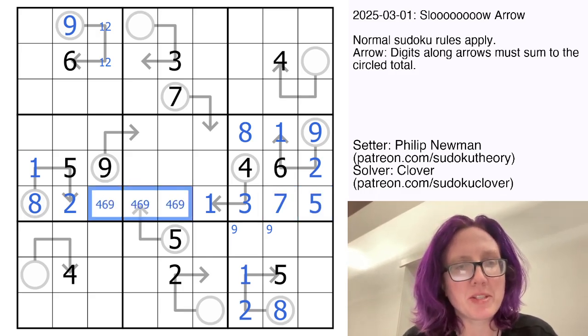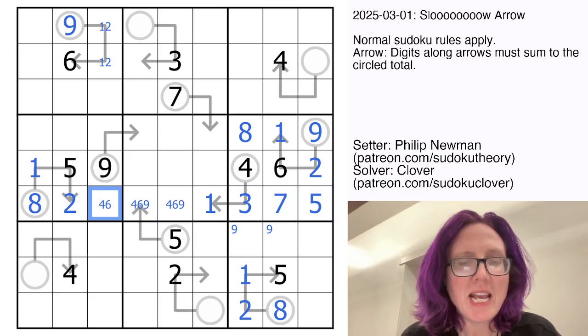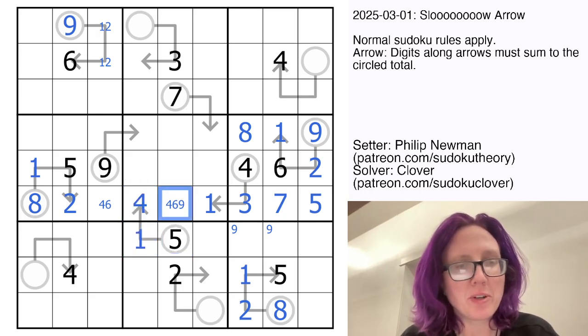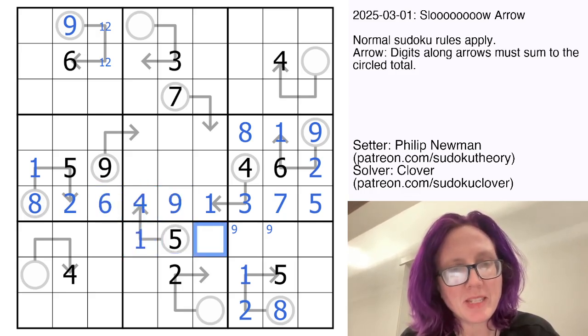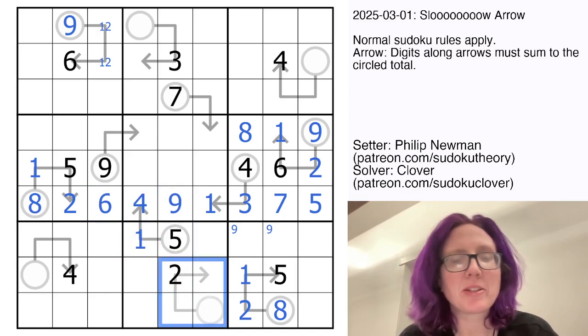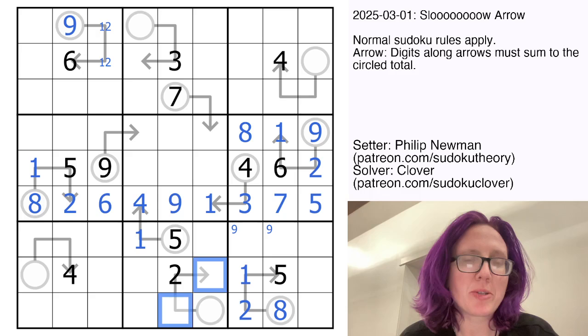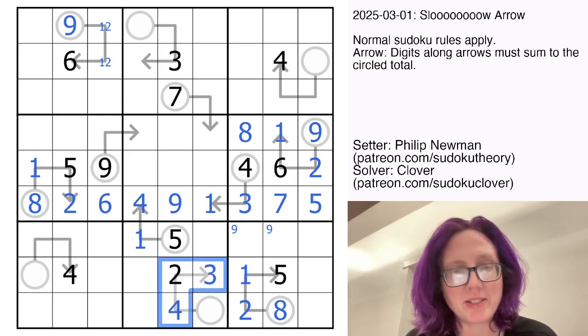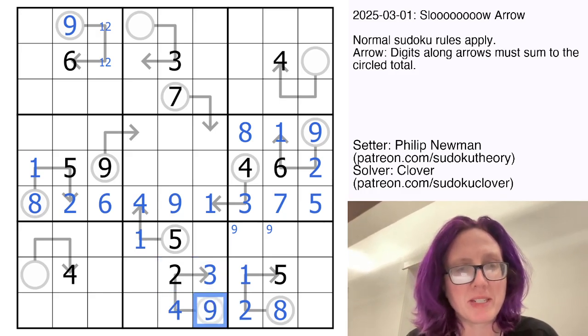And these digits are going to be four, six, and nine to finish off the row. That can't be a nine. That can't be a six or a nine because it's on a five arrow, so it's a four, and I'm going to place a one there. And now I know that this length three arrow cannot have a one anywhere on it, so it must be the smallest possible value that doesn't have a one on it. It's two, three, and four that sum to nine.